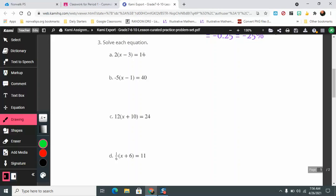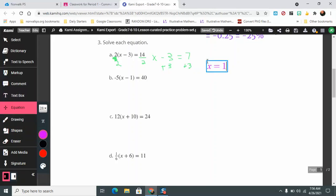If we say that it's 2 times something gives us 14, if I divide by 2 on both sides, that's going to mean that x minus 3 is going to equal 14 divided by 2 is 7. What number minus 3 equals 7? I can find out by adding 3 to both sides, and that means that my solution here is x equals 10.